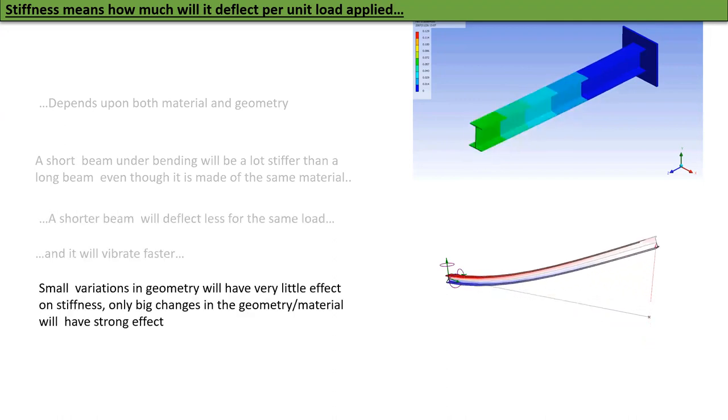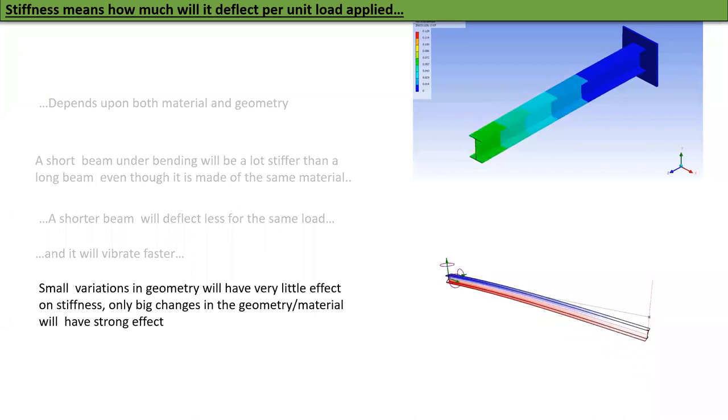Small variations in geometry will have very little effect on stiffness. Only big changes in geometry or material will have a strong effect.